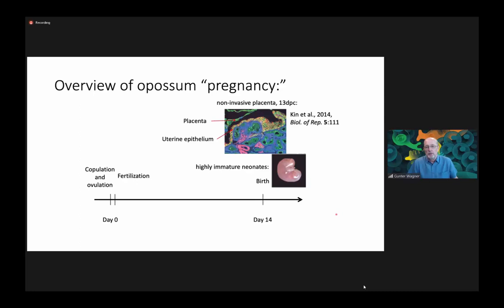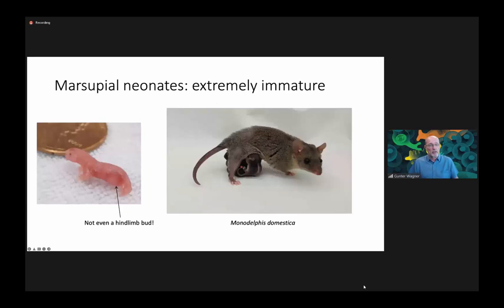We are working a lot with the opossum, which is a species that is an outgroup of the placental mammals. It has a form of placentation but not a fully developed form that has implantation and extended gestation. The opossum has a gestational length of about 14 days post-copulation and gives birth to quite immature neonates. The species we work with is Monodelphis — a marsupial that still doesn't have a pouch and has only one opening. These offspring are really immature; they don't even have hind limbs, only forelimbs.